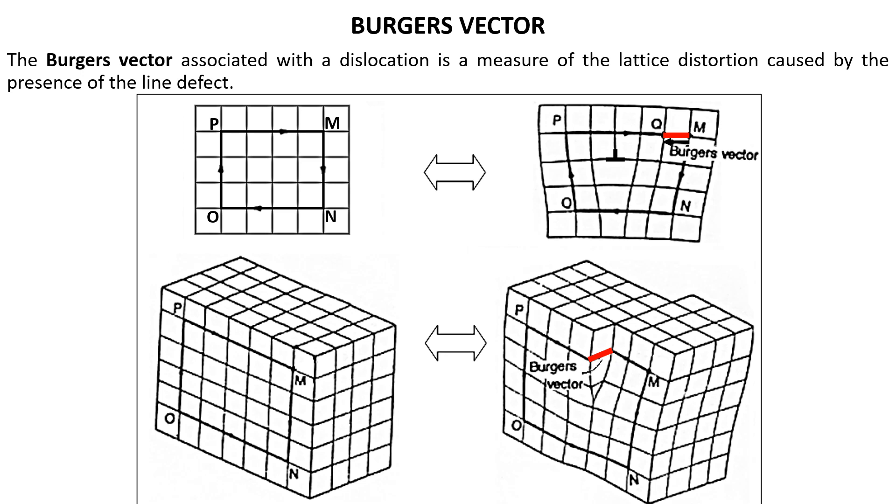But in case of the top right which is a dislocated lattice, this part of the image shows the crystal lattice with a dislocation. The Burgers circuit drawn here from P to M, M to N, N to O, and O to P does not return to the starting point. Instead, there is a gap between the starting point and the end position.